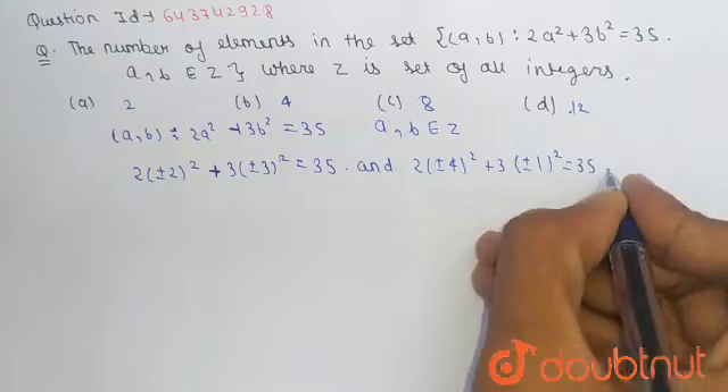So from this we get (a,b) equals (2,3), (2,-3), (-2,3), (-2,-3), (4,1), (4,-1), and